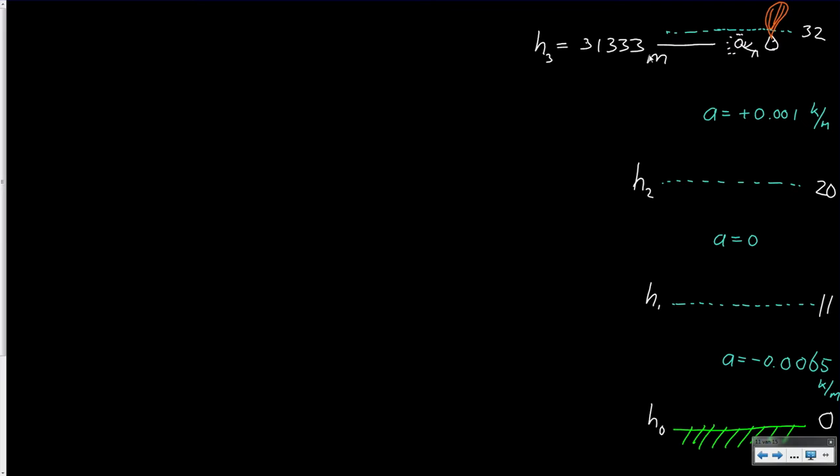He descended down through a number of layers until he arrived safely at sea level. For our calculation we are going to travel in exactly the reverse way, so we will start at sea level and then jump through all the layers to arrive at the altitude where Kittinger jumped.